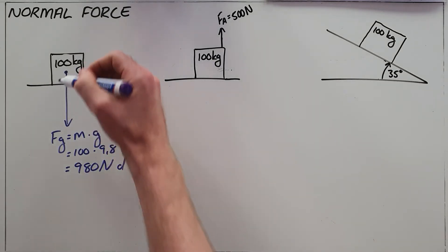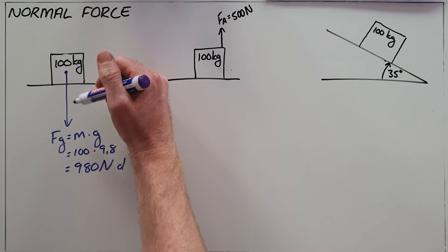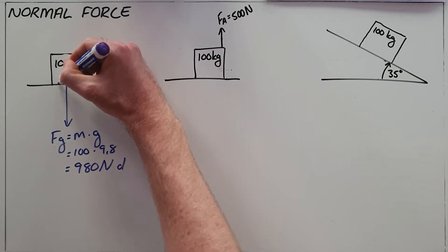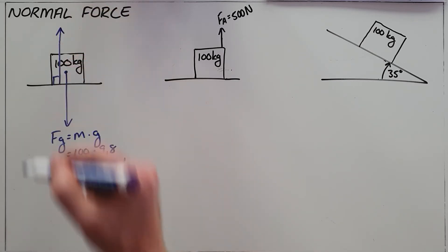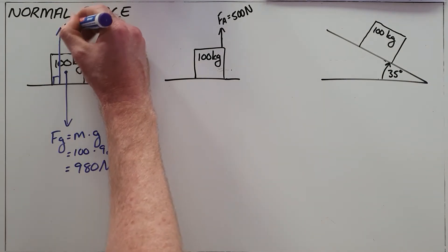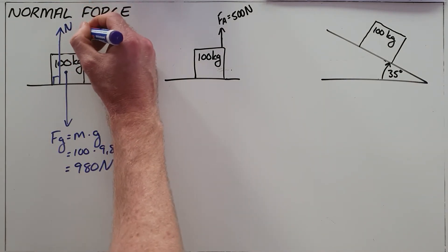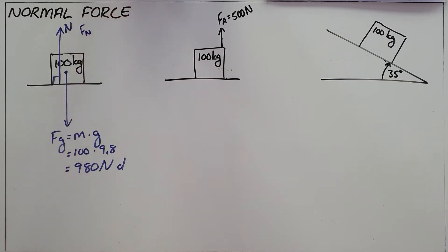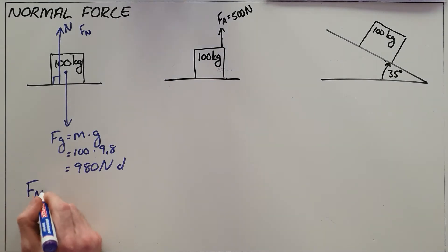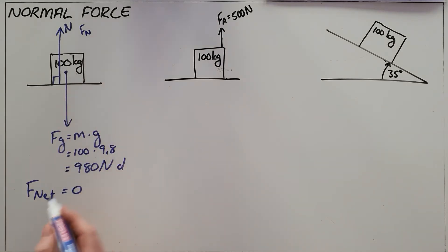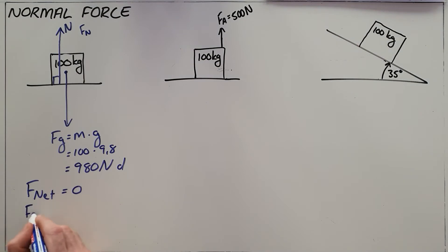Since this object is not sinking into the surface and is at rest, there must be an opposing force acting upward — that is the force the ground applies upward on the object, known as the normal force, depicted with an N or sometimes F of N. We calculate its magnitude using Newton's first law, which tells us that since this object is at rest, the net force acting on it is zero. The net force is made up of the force of gravity opposed by the normal force.